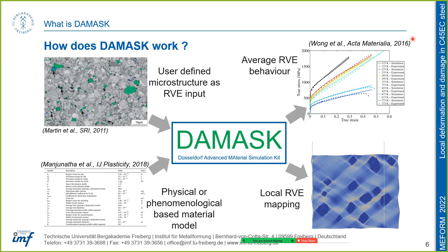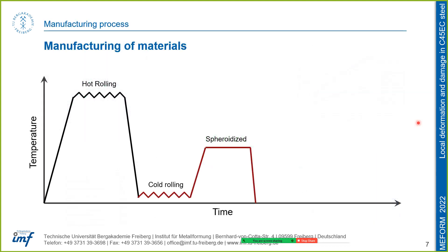We can choose from physical or phenomenological material models already incorporated in DAMASK and define attributes critically for each phase. We can define different loading conditions and run our simulations. Once complete, we can post-process the data to obtain either average behavior or local behavior — how local stresses and strains are distributed. In this research, we are developing these methodologies, and I will show an example of how we are applying them to a material.